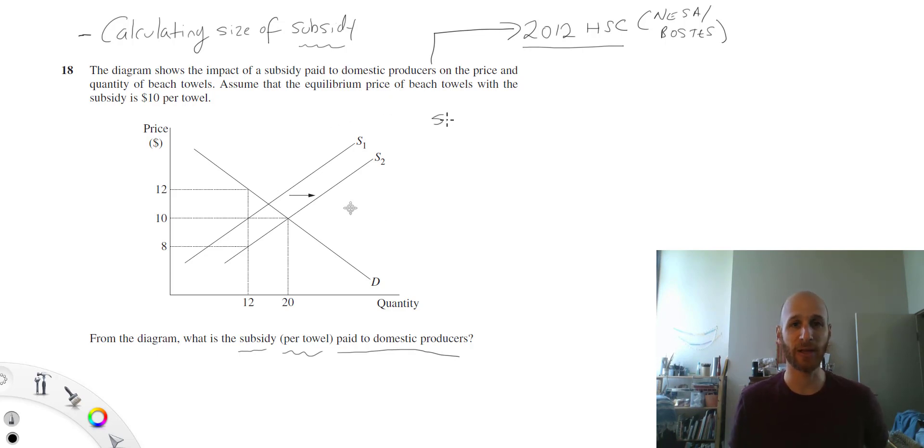Before we get into the meat of the question, let's think about it this way. The size of a subsidy is the vertical distance between the supply curves. It's this vertical distance in terms of calculating the size of the subsidy.